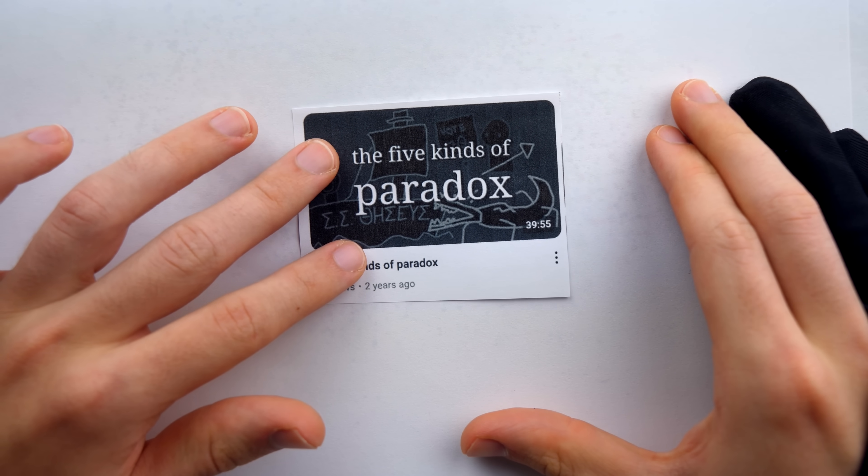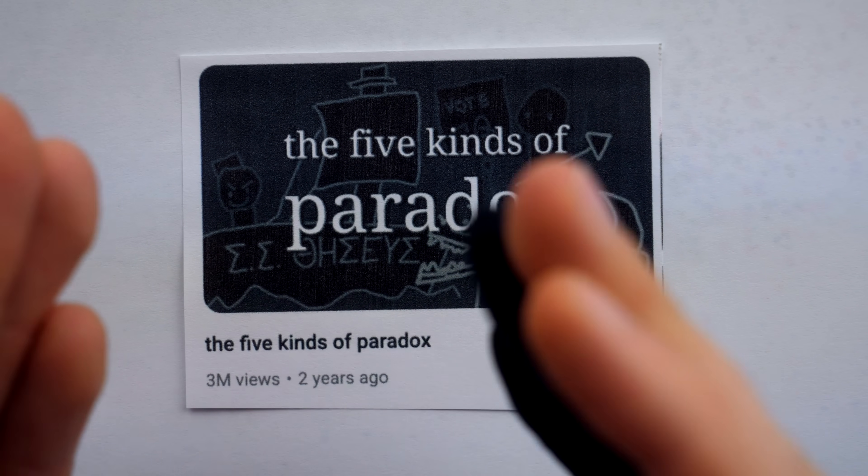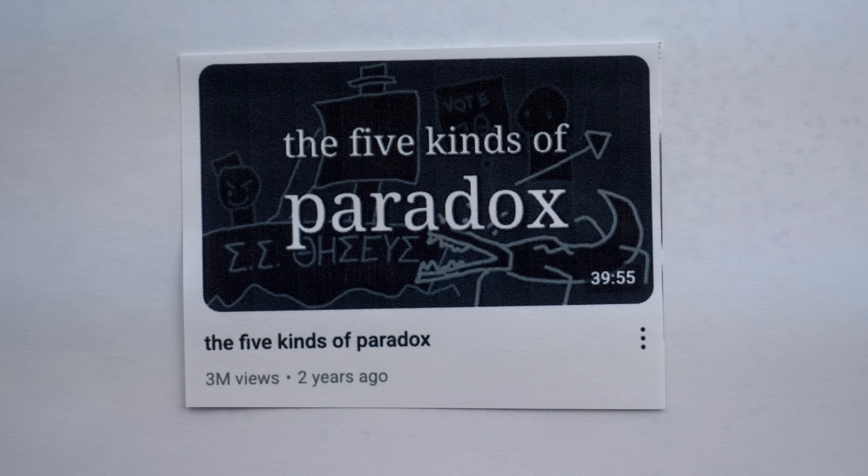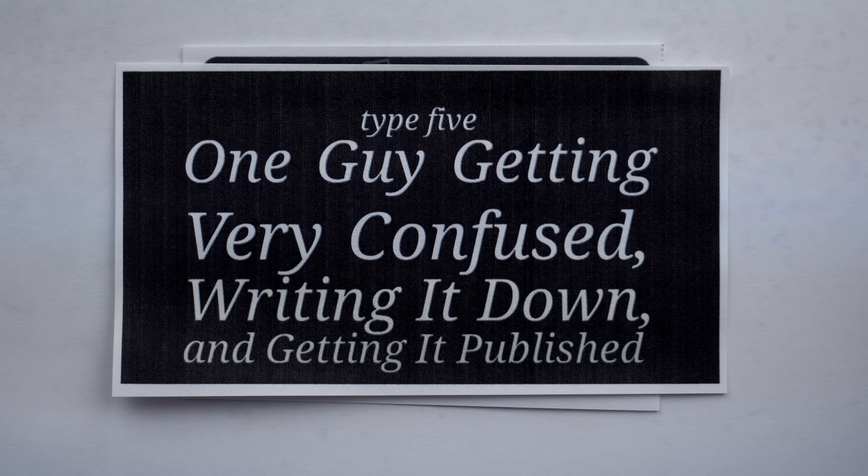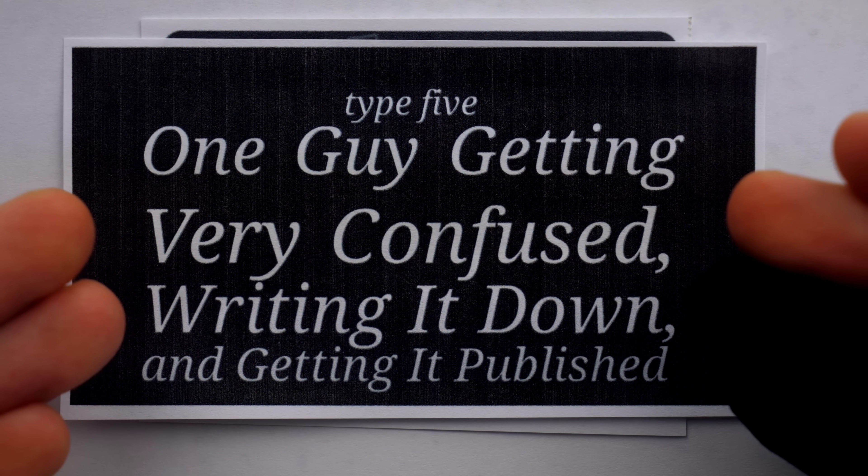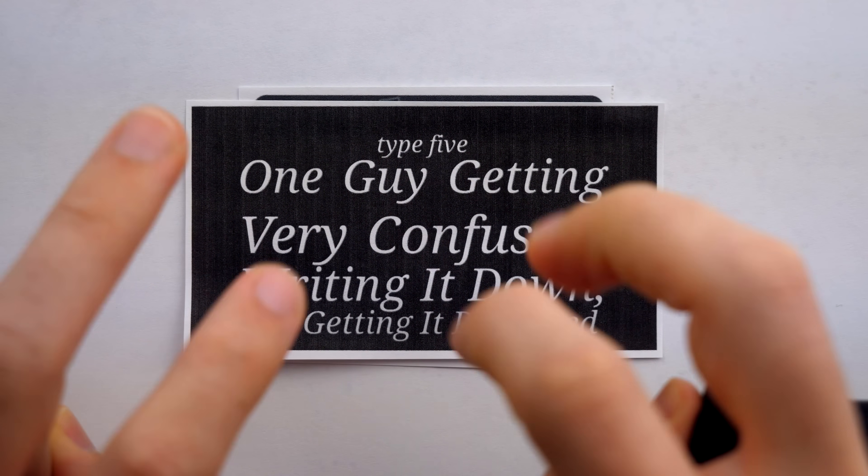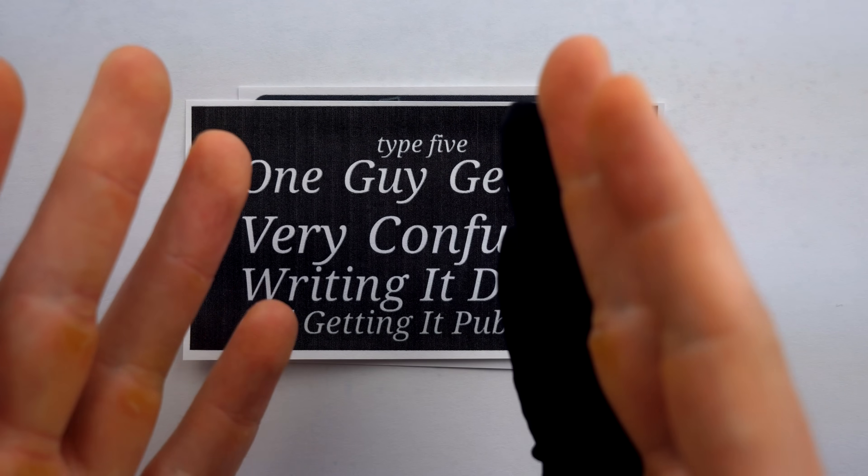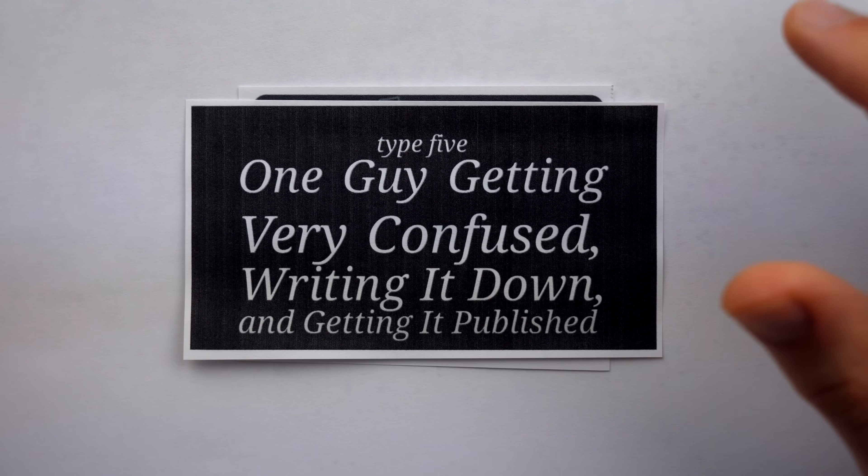In his classic 2022 video on the Five Kinds of Paradox, YouTuber Jan Miesli describes one type of paradox as one guy getting very confused, writing it down, and getting it published. These are the sorts of paradoxes someone might set up with the phrase 'but when you really think about it,' when in fact they should be saying 'when you really don't think about it at all.'